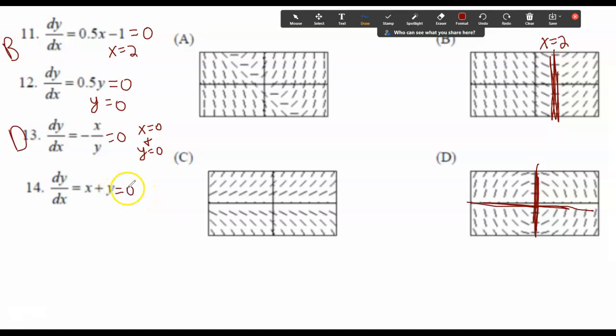This equals 0 when y equals negative x. Which looks like this a option. And c, I do have the zeros here. So that can be c.